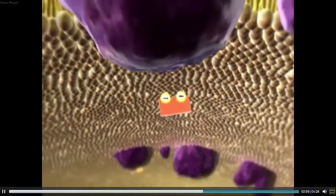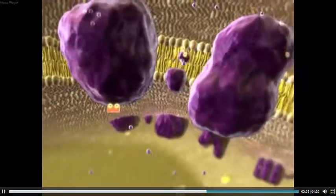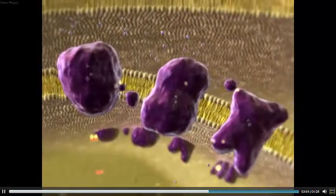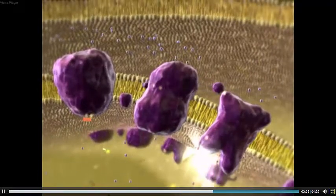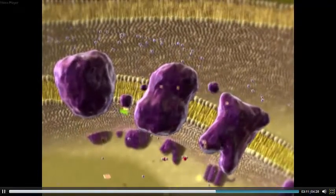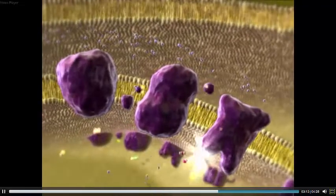Electron carriers such as NADH deliver their electrons to an electron transport chain embedded in the inner membrane of the mitochondrion. The chain consists of a series of electron carriers, most of which are proteins that exist in large complexes.